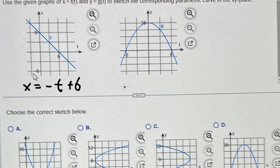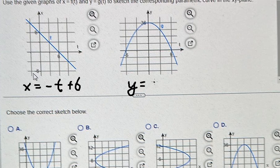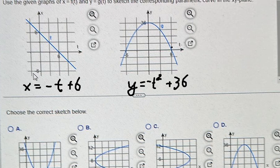The next one, we got about y equals to negative t squared plus 36. And this is the graph of this one.